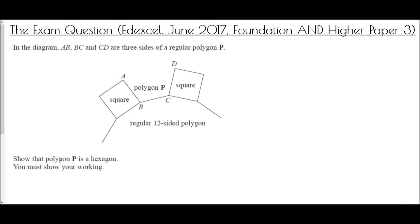We finish with an exam question from the Edexcel paper in June 2017, on both the foundation and higher paper 3. The diagram shows AB, BC, and CD as three sides of a regular polygon. We also have two squares. The task is to show that polygon P is a hexagon, and we must show our working. In a square, each angle is 90 degrees.